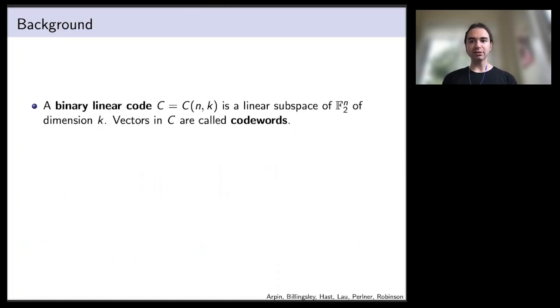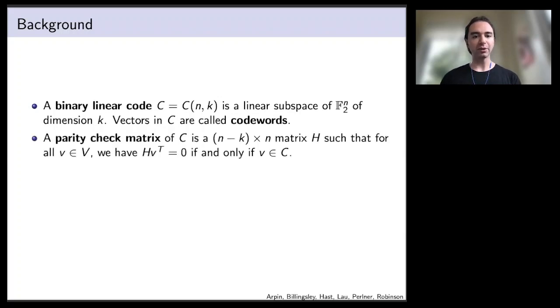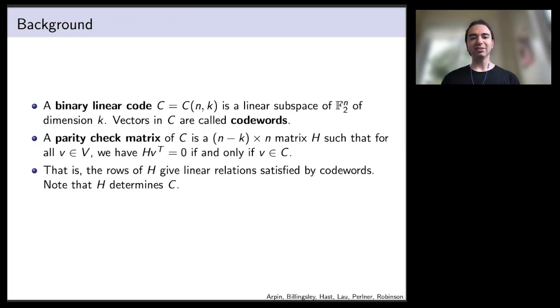So just for background to explain how BIKE works, a binary linear code is a linear subspace of an N-dimensional vector space over the field with two elements of some dimension k. A vector in this linear subspace is called a codeword. Binary linear codes are represented by a parity check matrix, which is a matrix that gives zero exactly for the codewords and not for other vectors in the message space. The rows of the parity check matrix give linear relations satisfied by the codewords. For any message vector, which we'll also call an error vector, H times that vector is called the syndrome. The syndrome is zero exactly for codewords and non-zero for non-codewords.